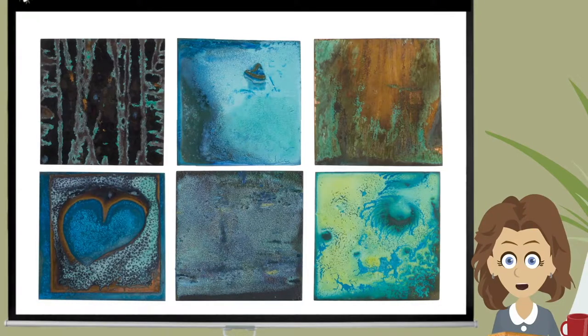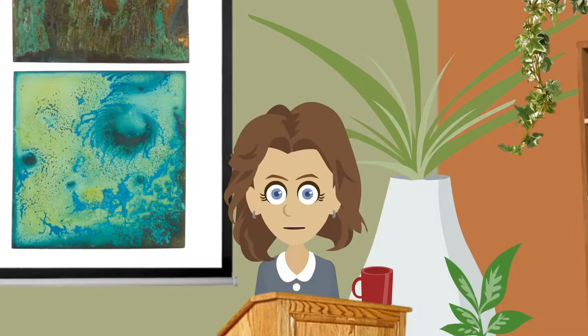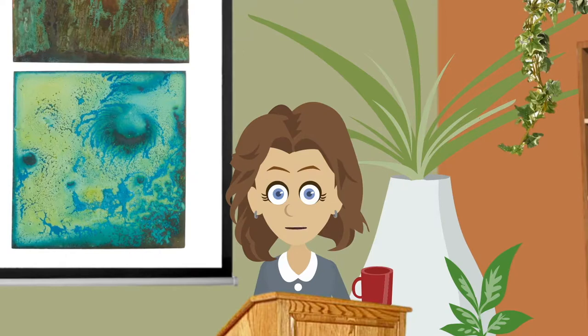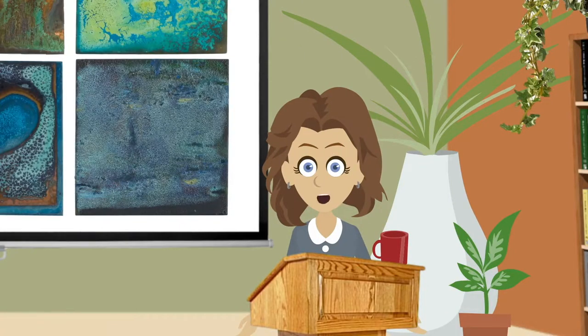A patina is a surface treatment which is often unstable. A natural patina forms over time, taking days, years, decades, hundreds, or even thousands of years to form.